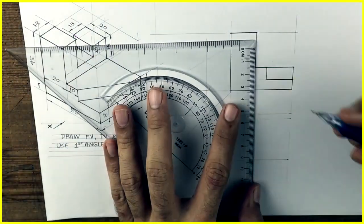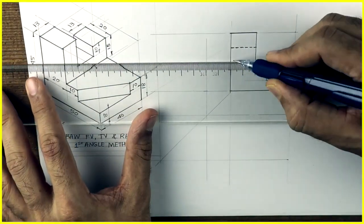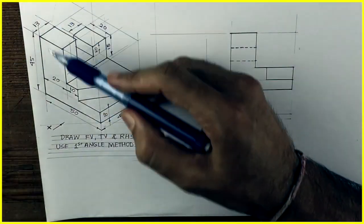So you go up by 15 from here and go down by 10. See this. So you'll get two dotted lines. So we are done with front view.